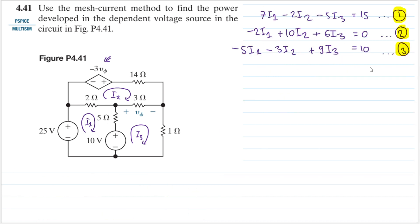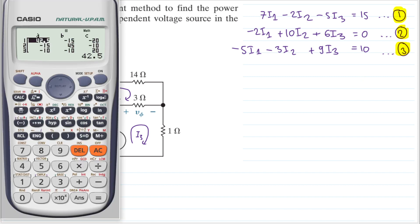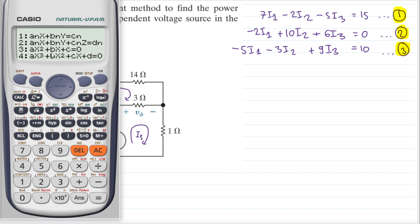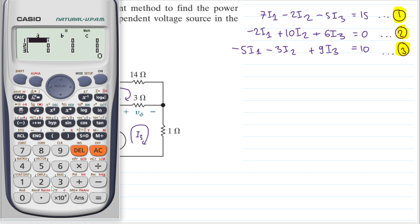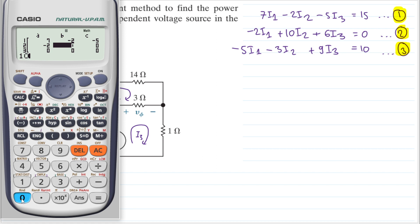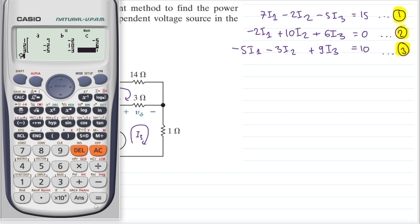We now have three equations with three variables. Let's solve them the fastest way — using the calculator's equation solver. Setting it up for three variables, I enter the coefficients: for equation 1: 7, minus 2, minus 5, and 15; for equation 2: minus 2, 10, 6, and 0; for equation 3: minus 5, minus 3, 9, and 10.